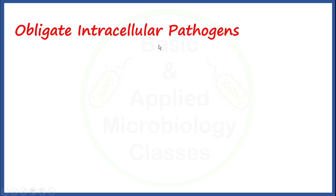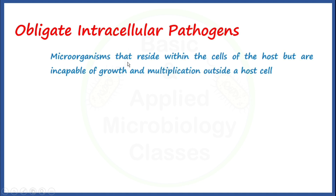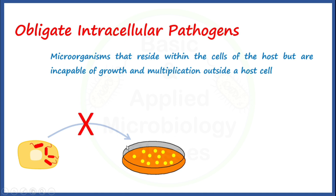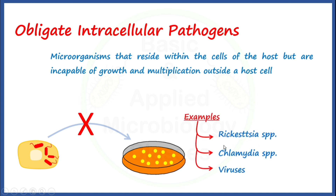Let's talk about obligate intracellular pathogens. These are microorganisms that reside within the cells of the host but are incapable of growth and multiplication outside a host cell. When we try to culture them in the laboratory under in vitro conditions, we are not able to do so, because they are strict with regard to the requirement of host cells to support their growth and multiplication. Rickettsia and Chlamydia are well-known examples of bacterial pathogens which are of obligate intracellular type.